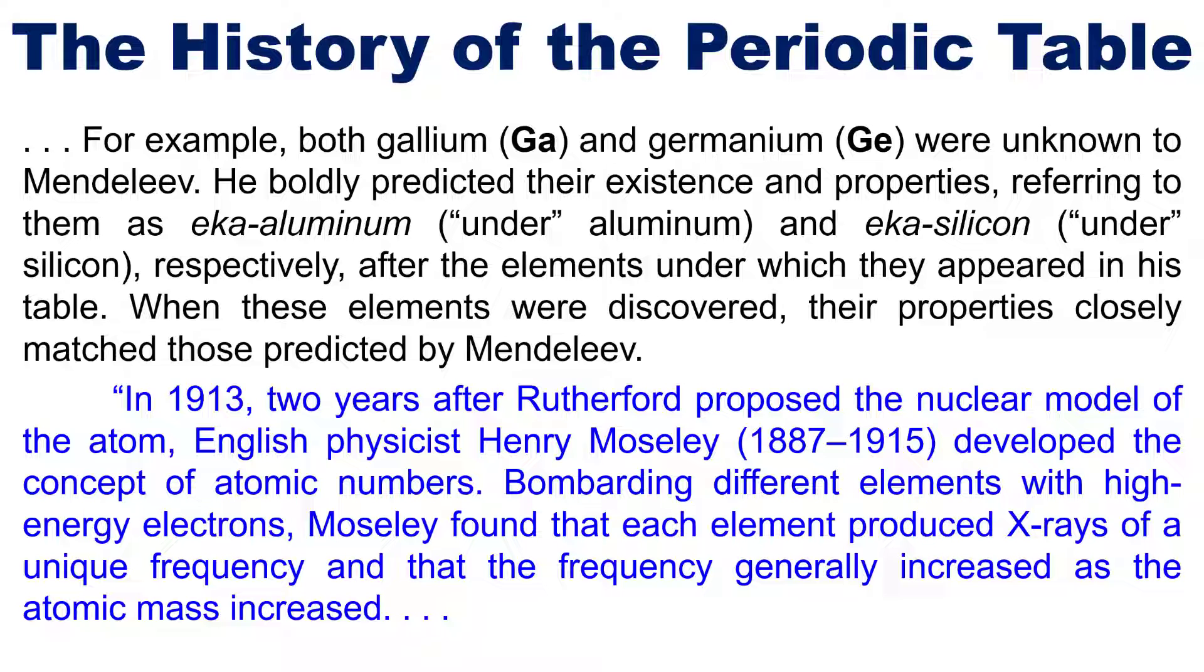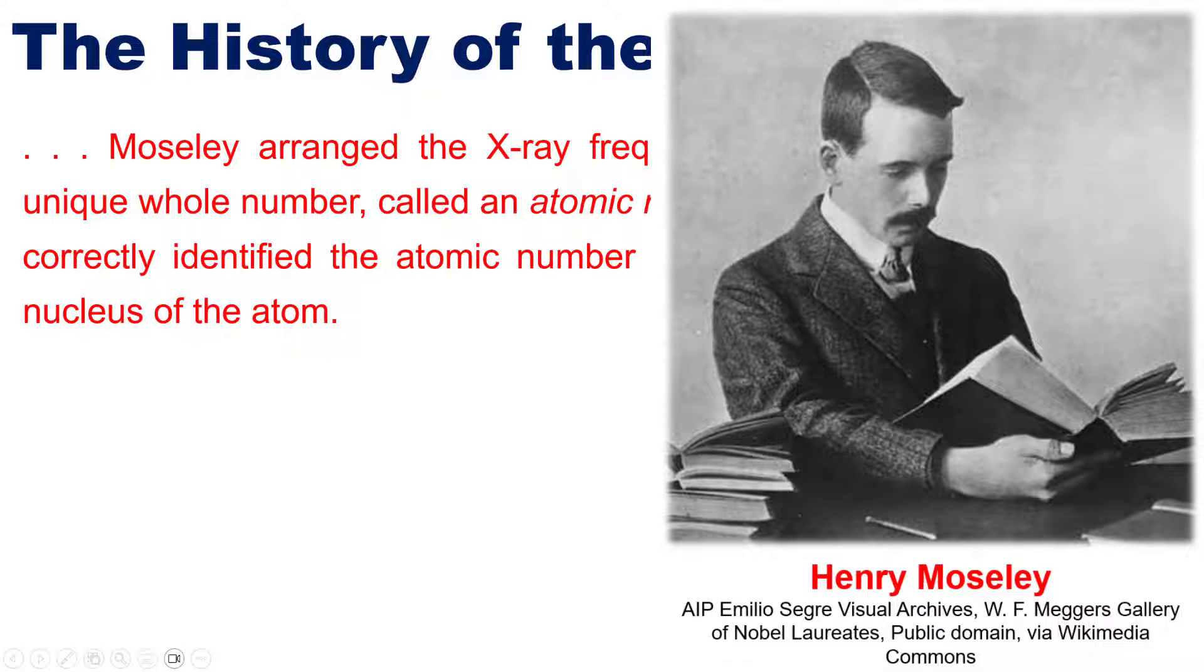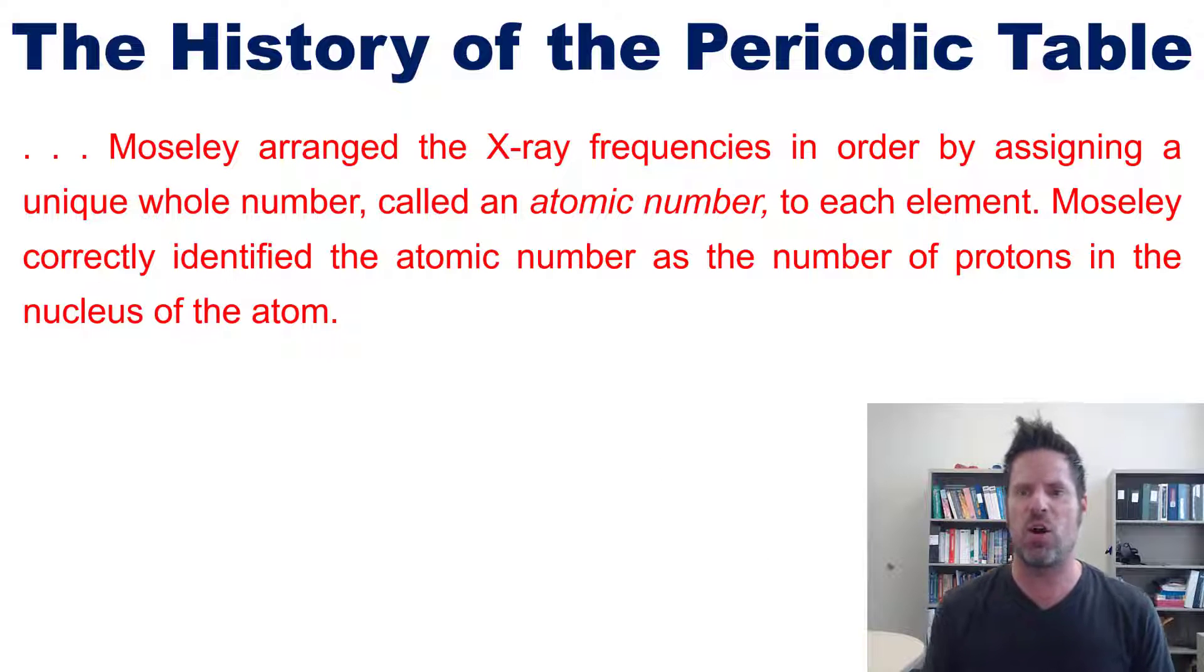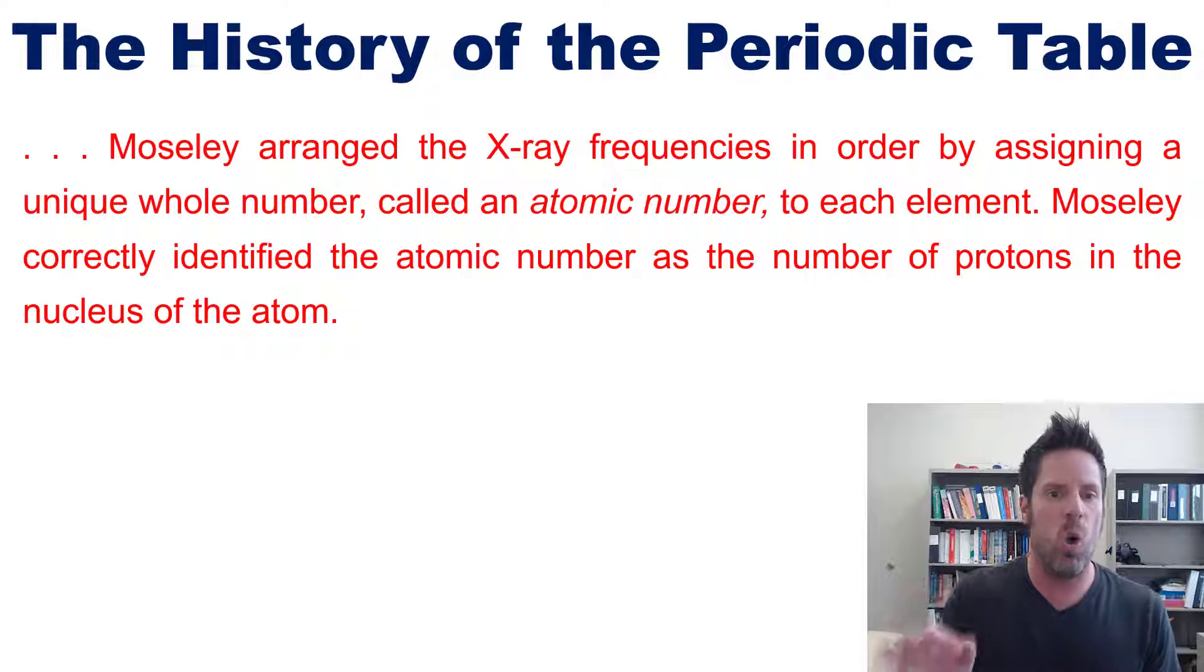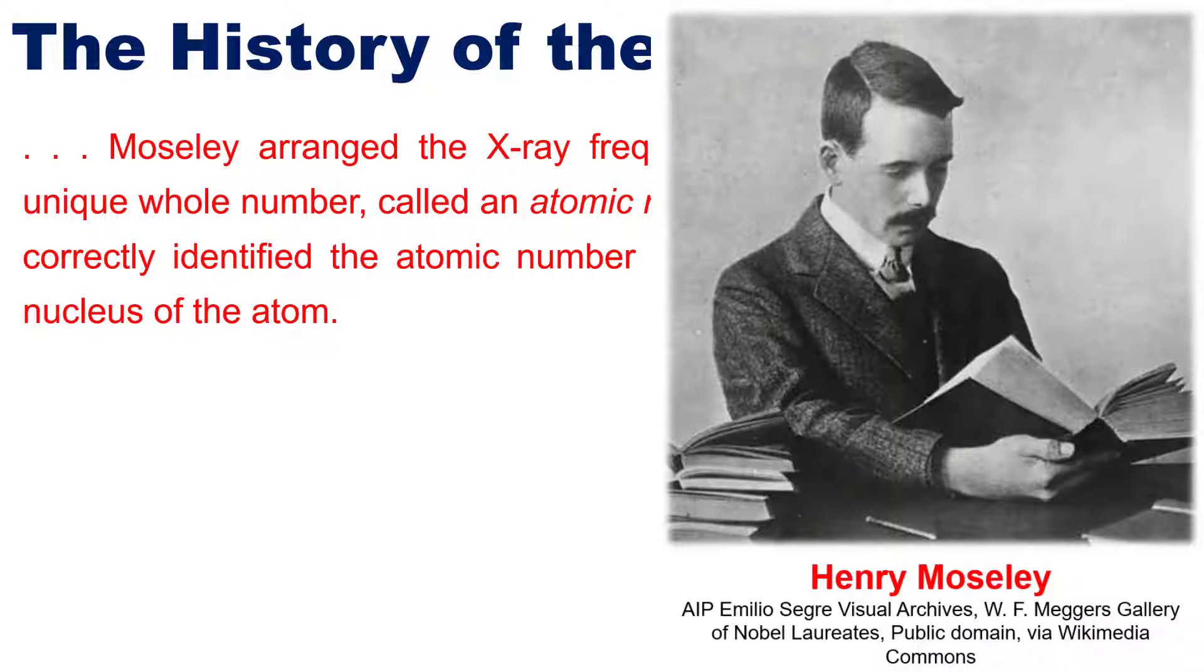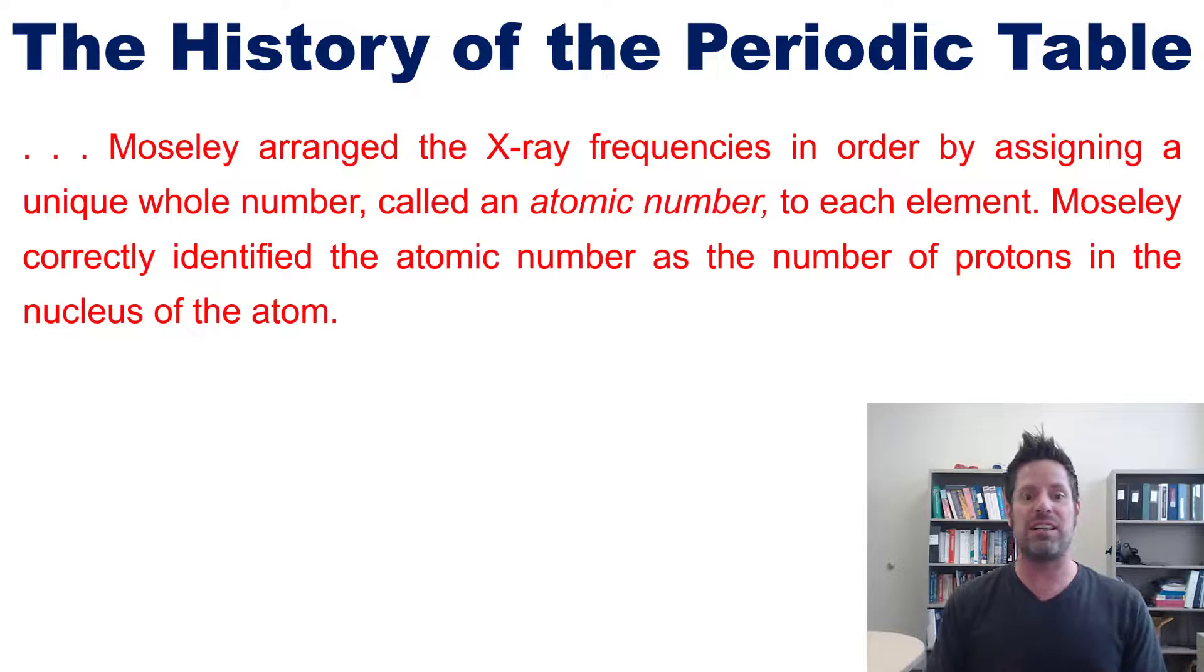Moseley arranged the x-ray frequencies in order by assigning a unique whole number called an atomic number to each element. Moseley correctly identified the atomic number as the number of protons in the nucleus of the atom.